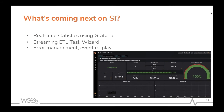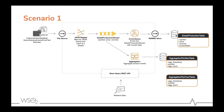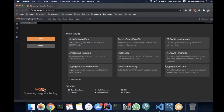Now we can jump into the demonstration. The first demo is about file processing and inserting into a database. We have a file set residing on the desktop. The file source will be reading those files and then, using a JSON mapper because the files contain data in JSON format, put them to a stream. Then it will store them in the RDBMS store, and also an aggregation happens in parallel using this Sweet Production stream and then stores in the DB as well.